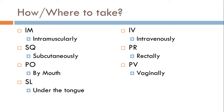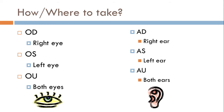IV means intravenously — inside the vein. PR means per rectum, meaning rectally. Think about suppositories — they go PR. PV means vaginally, for vaginal suppositories. So things that need to be inserted rectally or vaginally are labeled PR or PV respectively.